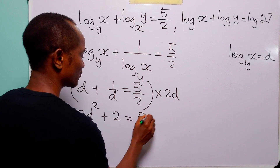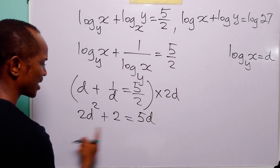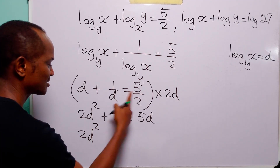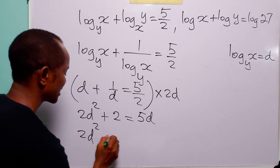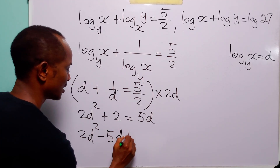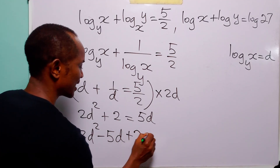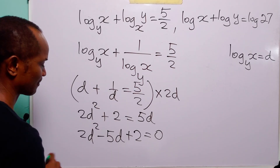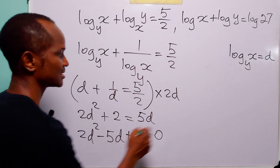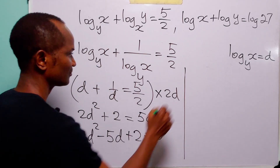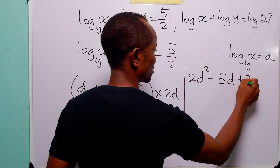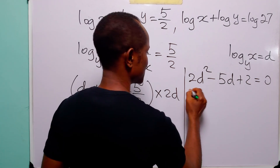5 over 2 times 2d — the 2 cancels — leaving us with 5d. When we rearrange this equation we have 2d squared minus 5d plus 2 equals 0. We have a quadratic equation, and we can factorize it: 2d squared minus 5d plus 2 is equal to 0.